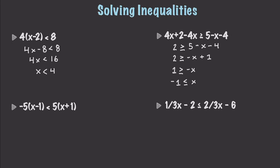Let's do two more. Using the distributive property — I focus on this because I know it's the one thing that confuses people the most. The 5's are going to cancel out on both sides, leaving us with 0 is less than 10x, which means that 0 is less than x.